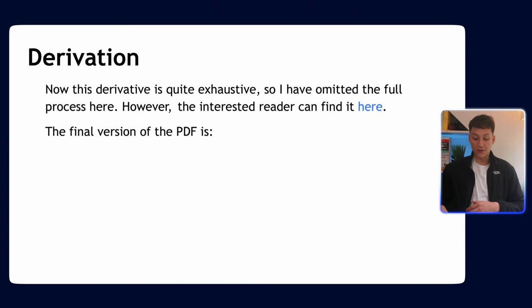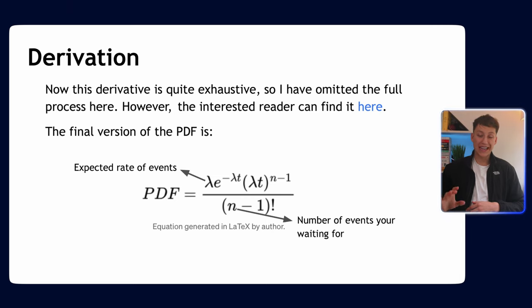Anyway, by doing that derivative we find the final version of the PDF is this, and this is basically the gamma PDF, this is what the gamma distribution looks like. Lambda is the expected rate of events, again this comes from the Poisson distribution that you can check out in my previous video, and n is the number of events we're waiting for. That's all there is to it, this is the gamma PDF function and that characterizes the gamma distribution.